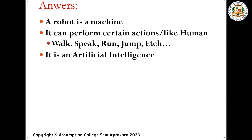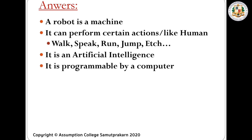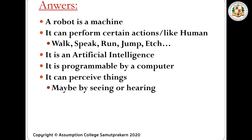It is an artificial intelligence. When we say artificial intelligence, it means it is made by humans. The brain or the intelligence of the robot is not natural, it's artificial. It is programmable by a computer — you can program a robot using a computer. It can perceive things; maybe it can hear, it can see using some sensors. It can think and make decisions using conditional programming.